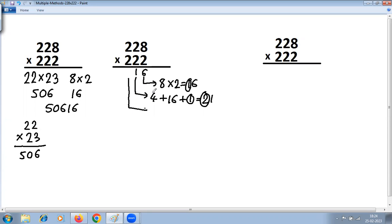Next step: 2 into 2 is 4, plus 8 into 2 is 16, plus 2 into 2 is 4, plus there is a carry 2 in the previous step.